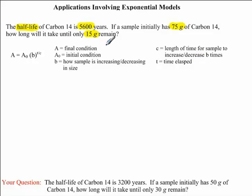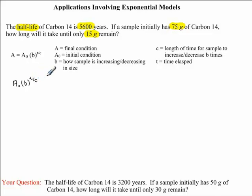All we're going to do now is take our values that were given to us in the question and substitute them into our formula. So rewriting the formula: A subscript 0 times B to the exponent T divided by C, equals A. A subscript 0 is our initial condition, which we're told is 75 grams, so I'm going to substitute 75 in for A subscript 0.